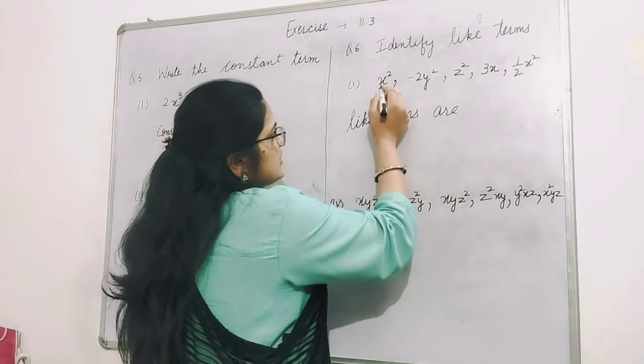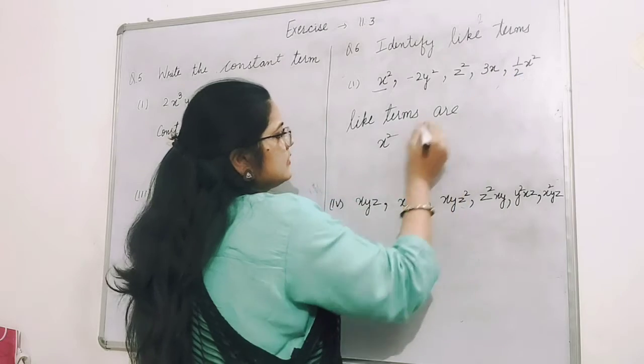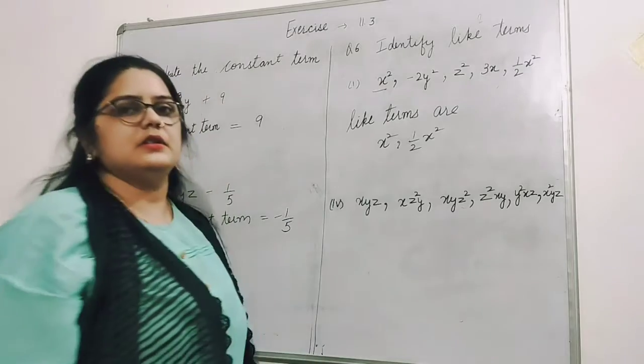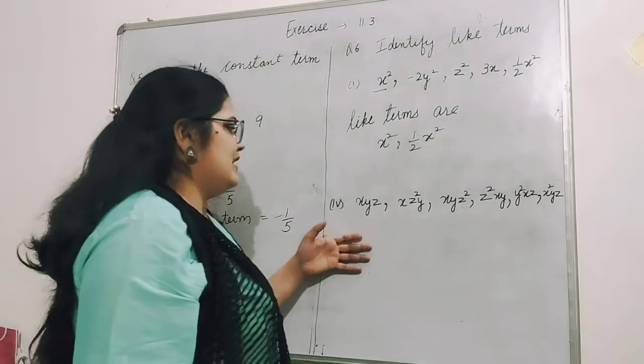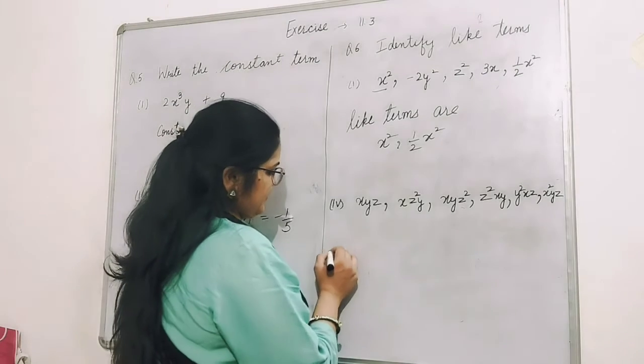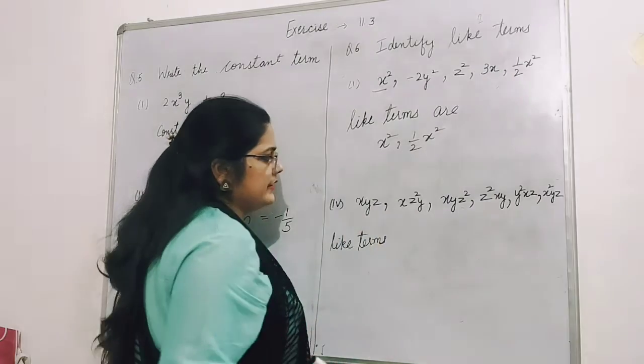Like terms are: one is x² and 2/3x², 1/2x². These have the same variable with the same power.